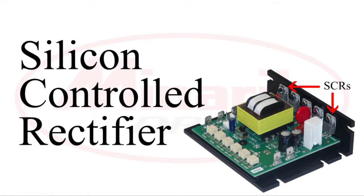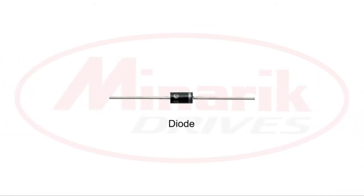But before we can talk about SCRs, we first have to understand diodes. Diodes are electrical components that allow electricity to flow in only one direction, similar to a check valve in a plumbing system.